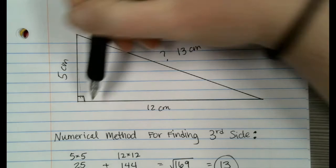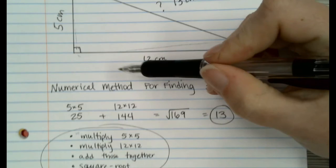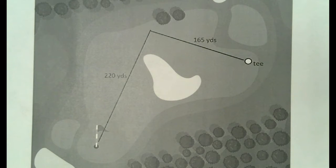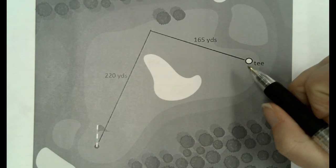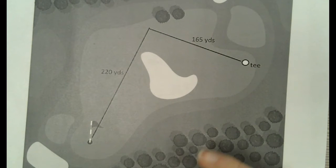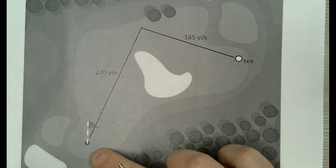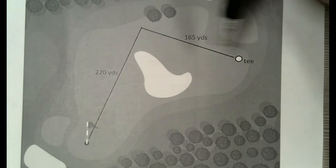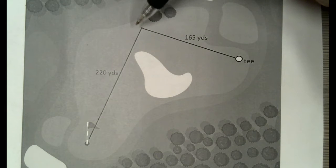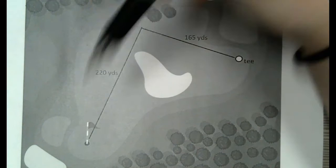We should be able to take just about any triangle that looks like this one — if we have these two sides, we can find the third side using this method. That leads me to a golf problem. So let's say this is my golf course. Right here is where they tell you to tee off and you've got to get the ball from here into the hole. They've shown us on this map that most people would hit it from here to here, which is about 165 yards, and then from here to here, which is about 220 yards.